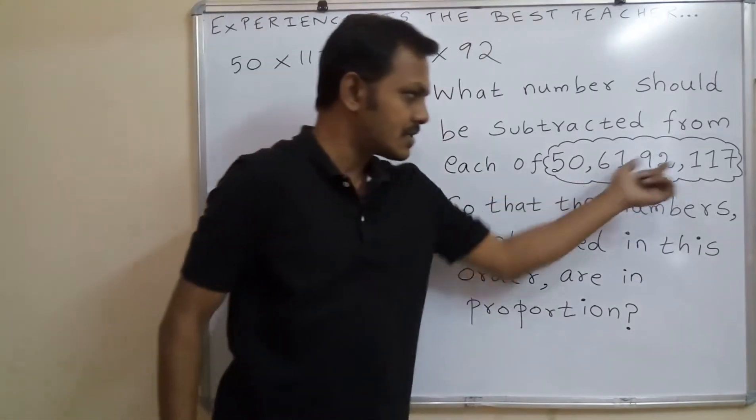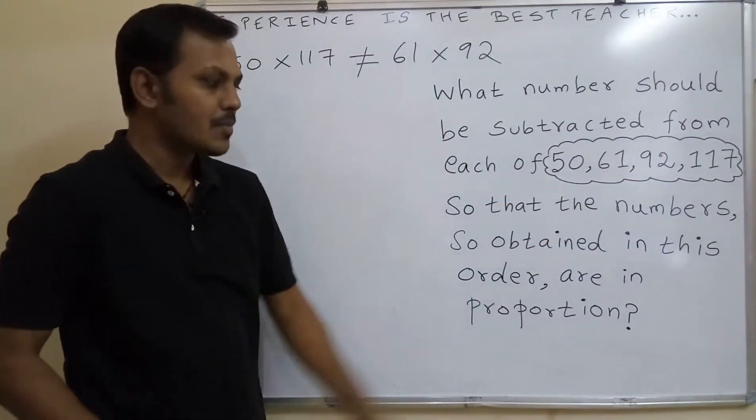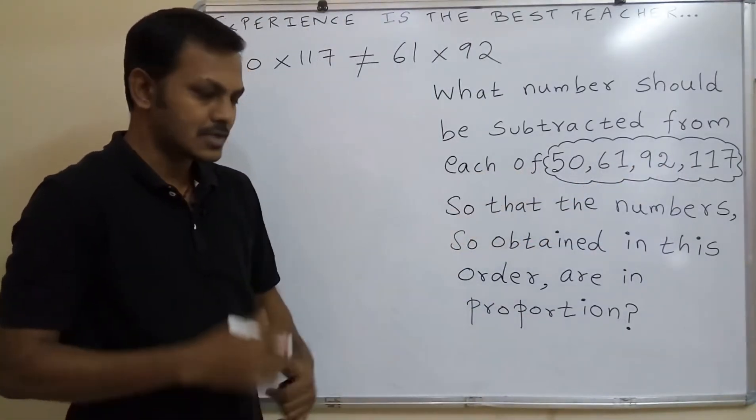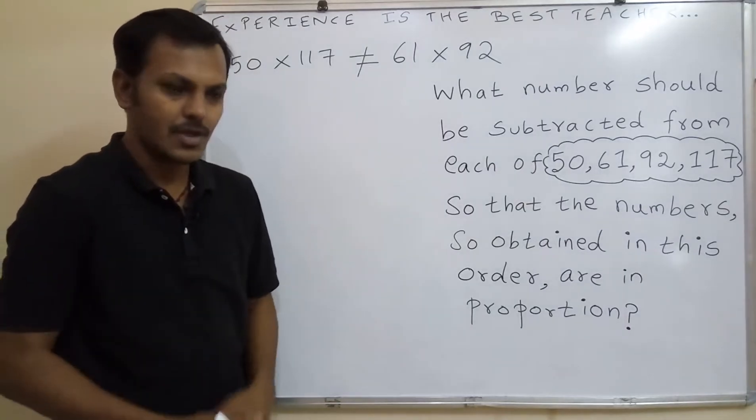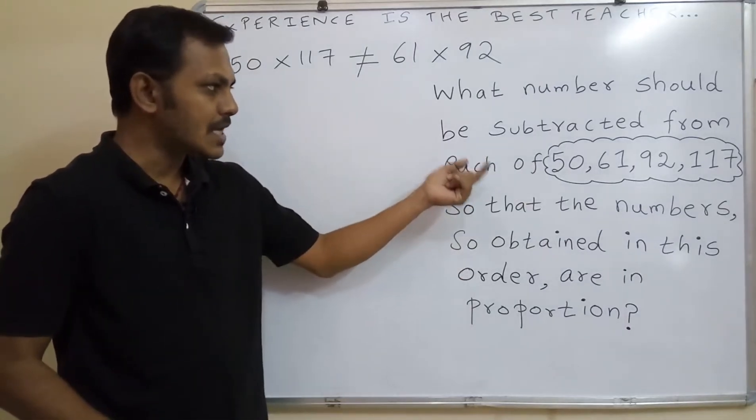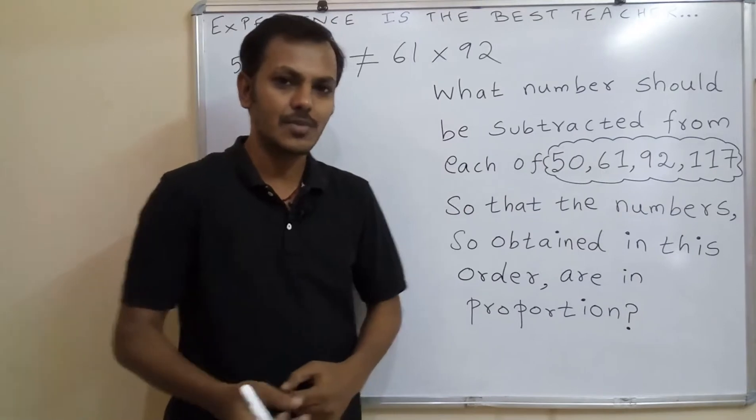That is product of extremes is equal to product of means. But it is not given in proportion form. What numbers should be subtracted from each of this so you will get the proportion.